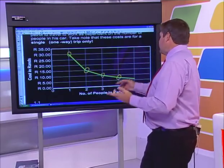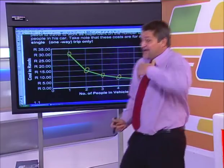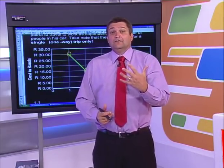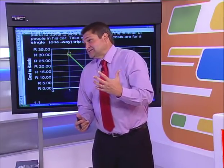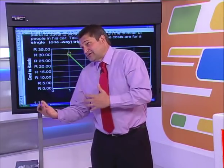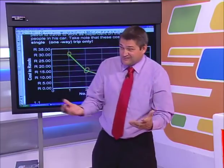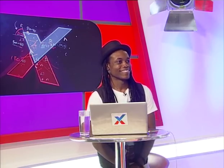And finally, if there are five people in the car — total 30 rand — each person pays 6 rand. So that's how the graph works. Let me get rid of these points here so we can see it a lot clearer.